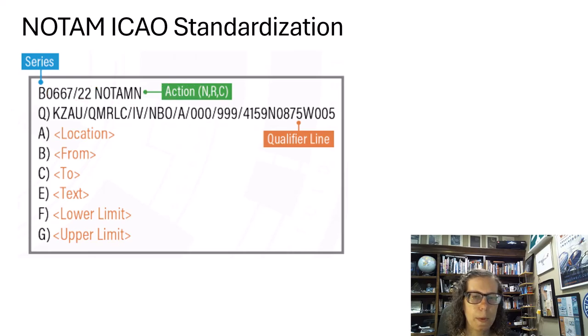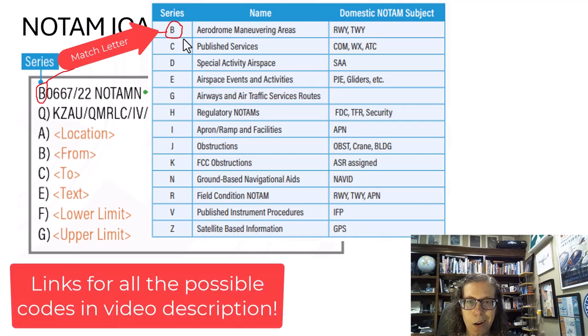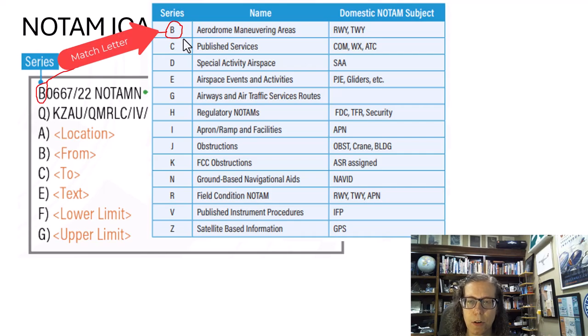Let's start off with the bit about the series. The series, so B tells basically what it's going to be about. There are so many new codes to the ICAO formatting. I'm going to put some other links in the video description because not all of this is in the FAA's PDFs that they've released. The series, we have a specific series what the NOTAM is about, and this NOTAM is going to be about something that has to do with runways or taxiways.